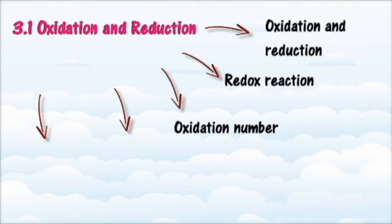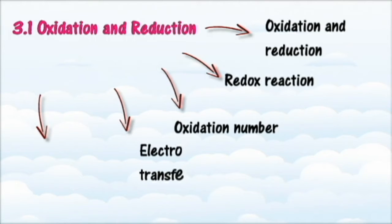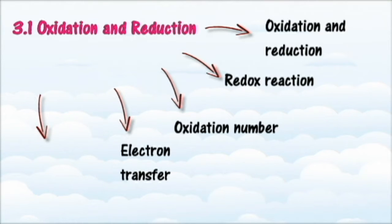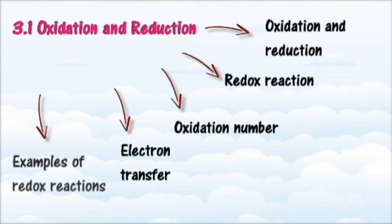You should also be able to calculate the oxidation number of an element in a compound, relate the oxidation number of an element to the name of its compound using IUPAC nomenclature, explain with examples oxidation and reduction processes in terms of change in oxidation number, explain with examples oxidation and reduction processes in terms of electron transfer, explain with examples oxidizing and reducing agents and redox reactions, and write oxidation and reduction half equations and ionic equations.